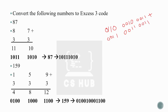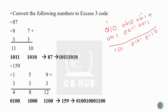Performing the binary addition of 0011 to each four-bit group: for each group, we add bit by bit carrying as needed. The resulting bit patterns after addition give us the corresponding Excess-3 encoded value for each decimal digit.